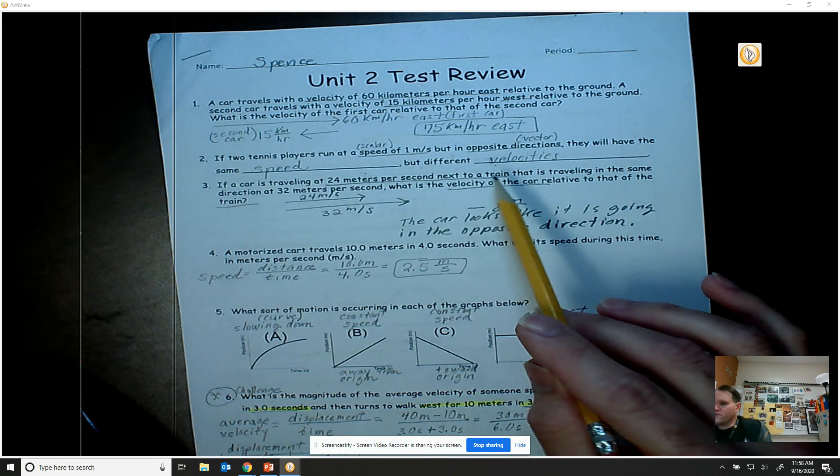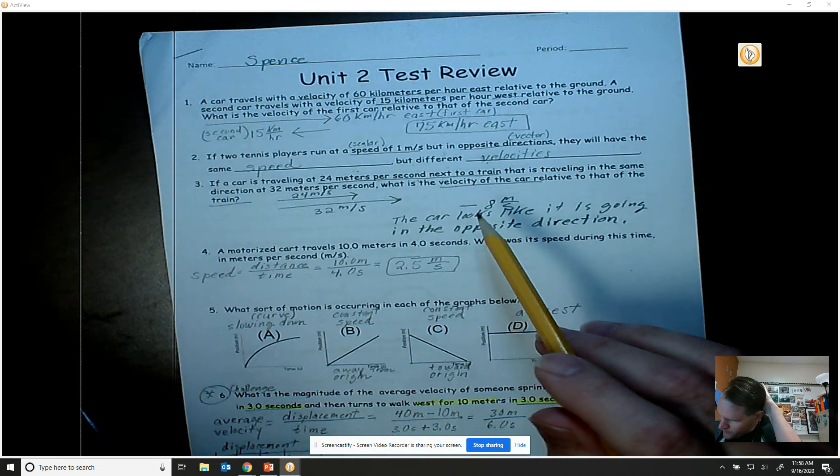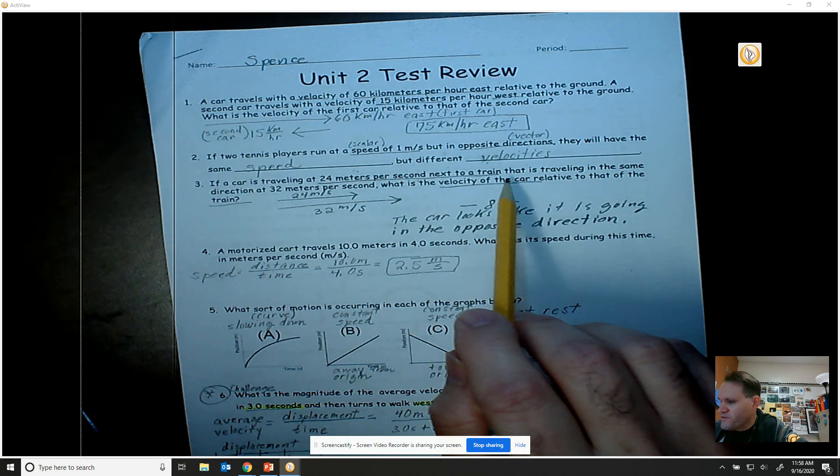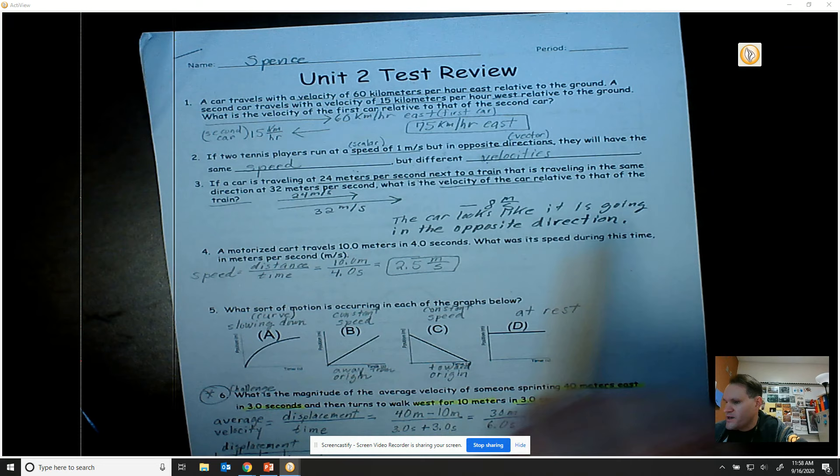For number three, a car's traveling at 24 meters per second next to a train that is traveling in the same direction at 32 meters per second. What is the velocity of the car relative to that of the train?